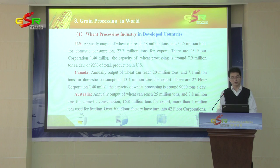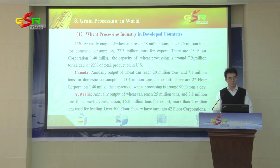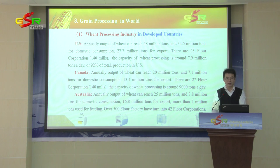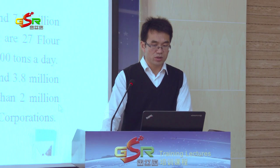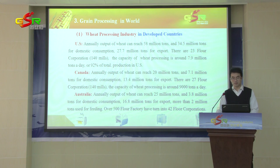The capacity of wheat processing in the United States is around 8 million tons per day, accounting for 92% of total production. In Canada, there are 27 flour corporations, with a wheat processing capacity of around 9 million tons per day. In Australia, over 500 flour factories have been consolidated into 42 flour corporations.